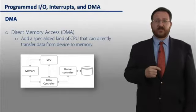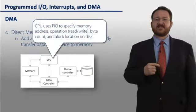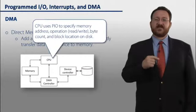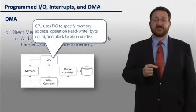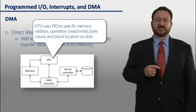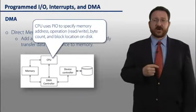Here's a block diagram of what that might look like. So, we start out our IO request by having the CPU issue a programmed IO instruction to specify the memory address where we want the transfer to take place to, the operation, either a read or write, the number of bytes we want to transfer, and then, of course, a location on the disk that we're going to read or write from or to.